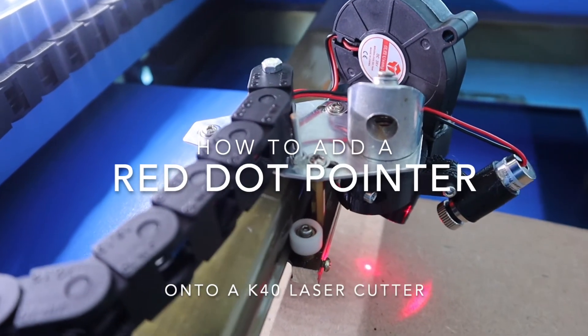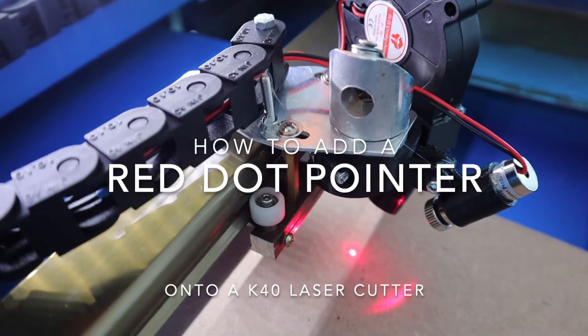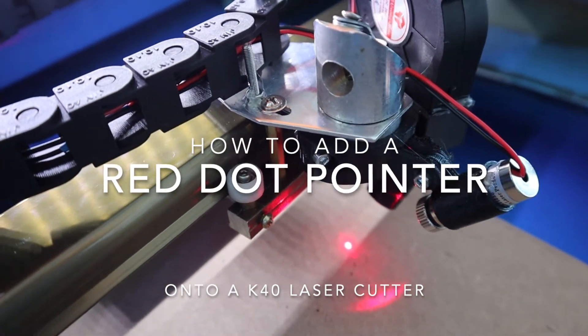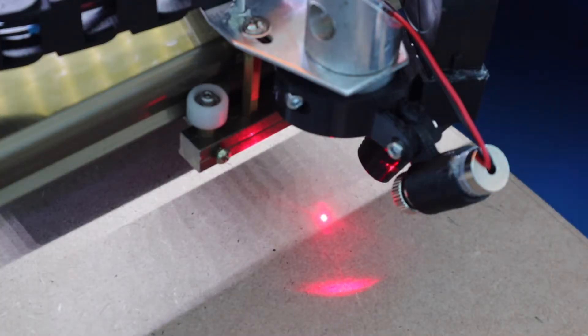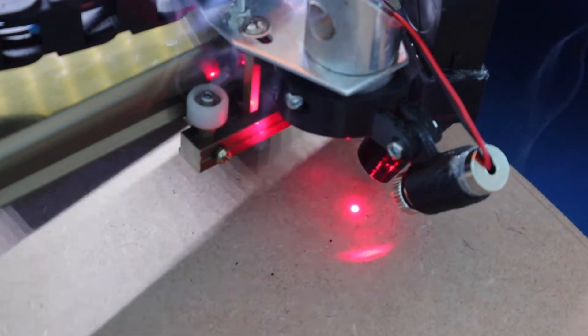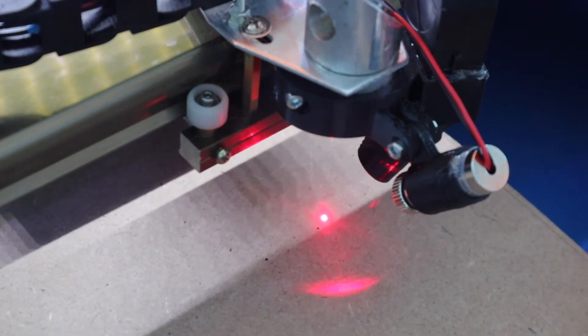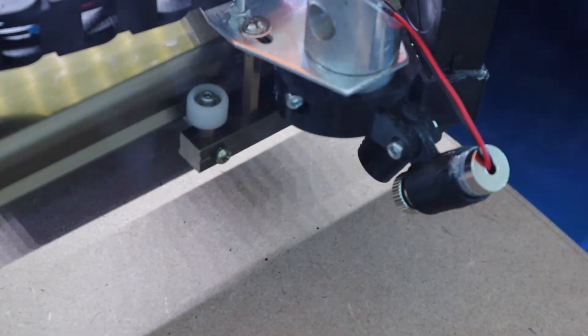In this video, I'm going to be showing you how to add a red dot laser pointer onto your K40 laser cutter. If you've used one of these stock laser cutters before, then you'll know that positioning the laser for a cut is a bit of a guessing game. So I'll show you how to add a small laser pointer to the cutting head in order to indicate exactly where the laser is aiming.